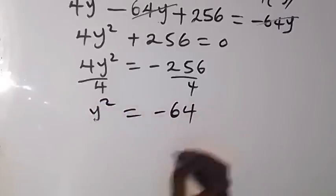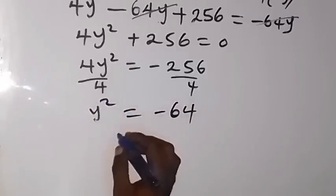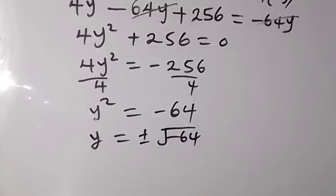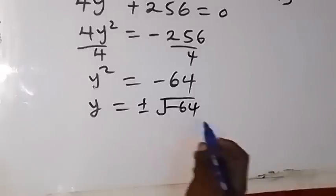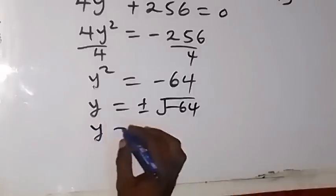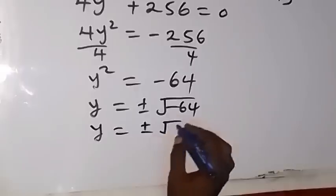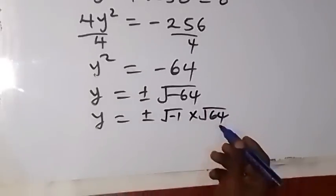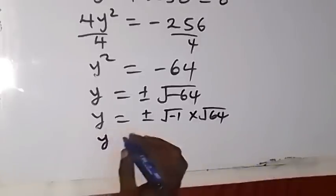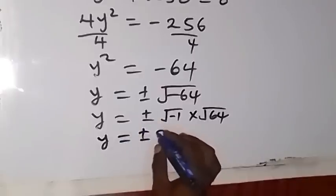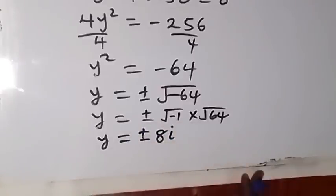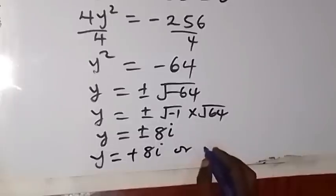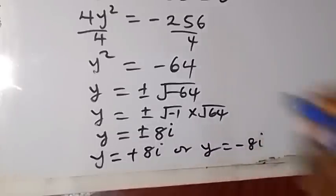To get y, we take the square root of both sides: y equals plus or minus square root of minus 64. The square root of minus 64 can be separated as square root of minus 1 times square root of 64. Square root of minus 1 is i, and square root of 64 is 8, so y equals plus or minus 8i. We have two solutions: y equals positive 8i, or y equals negative 8i.